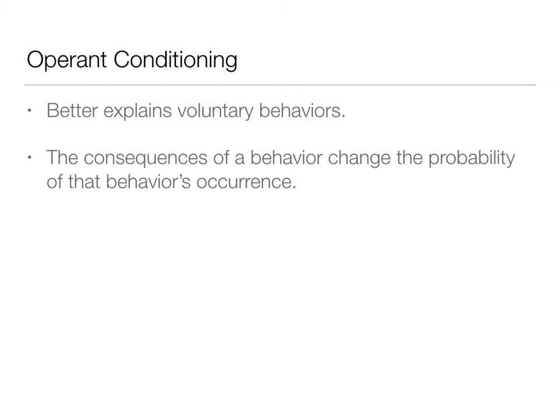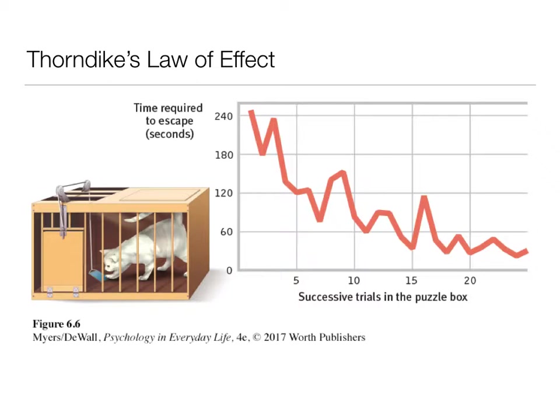Before Skinner and before it was called operant conditioning, this all started with a man named Thorndike. Thorndike's Law of Effect involved puzzle boxes he put cats in. He charted how long it took them to get out, as there was a latch, string, and different things to manipulate. When they got out, there would be a treat. When those behaviors were rewarded, they were more likely to happen again — at first the cats got out by chance, and those chance behaviors were then reinforced.